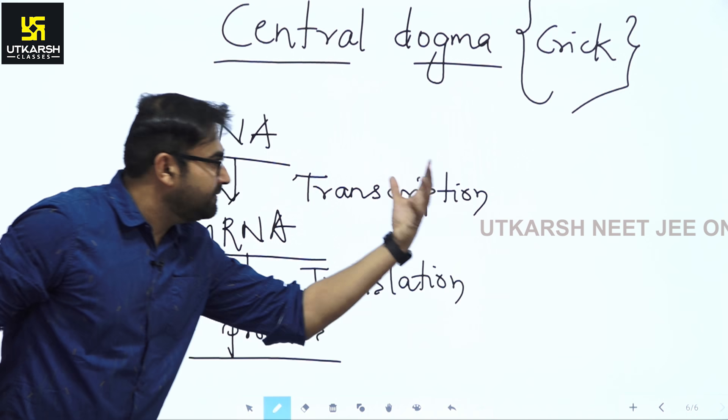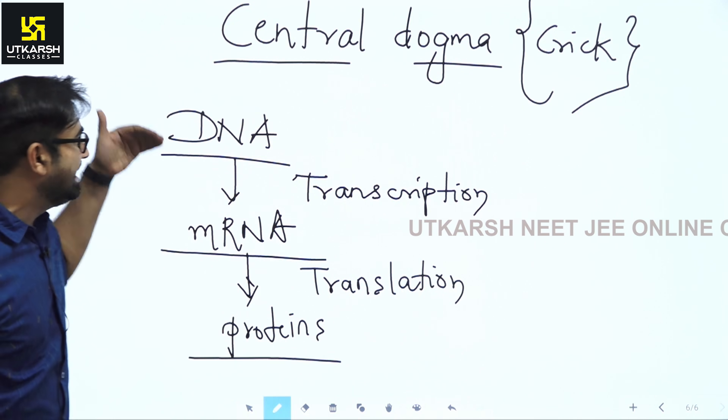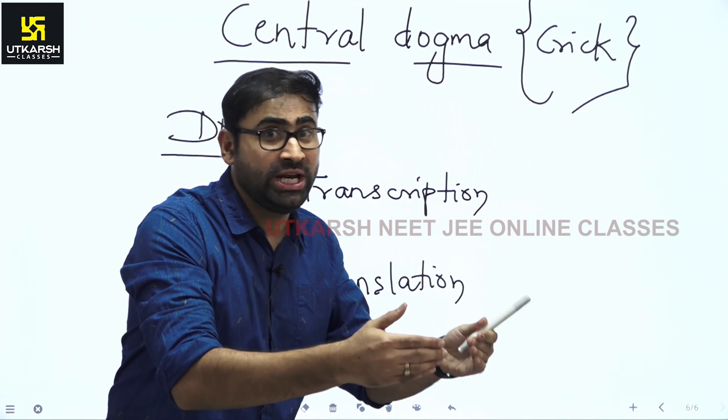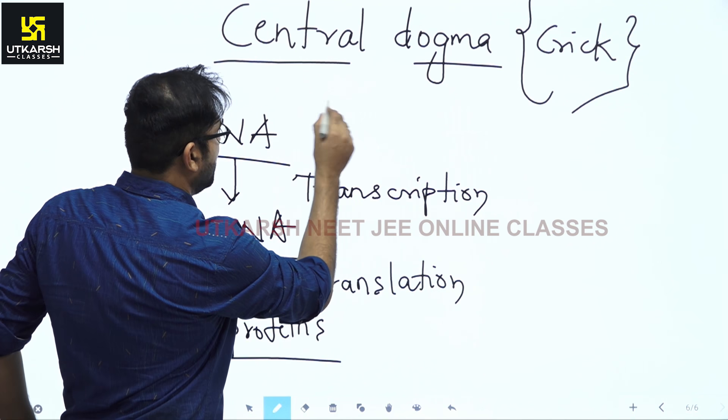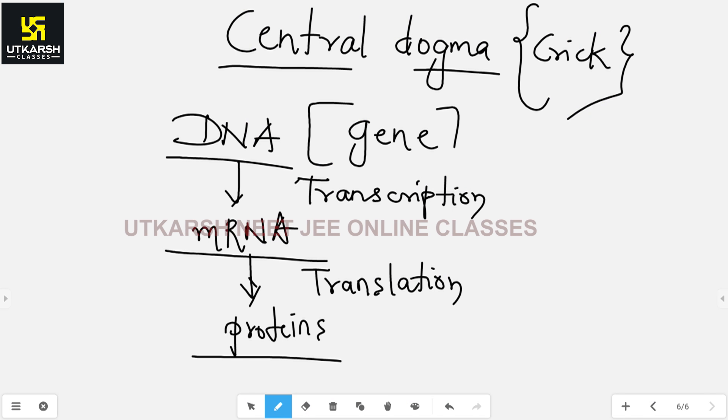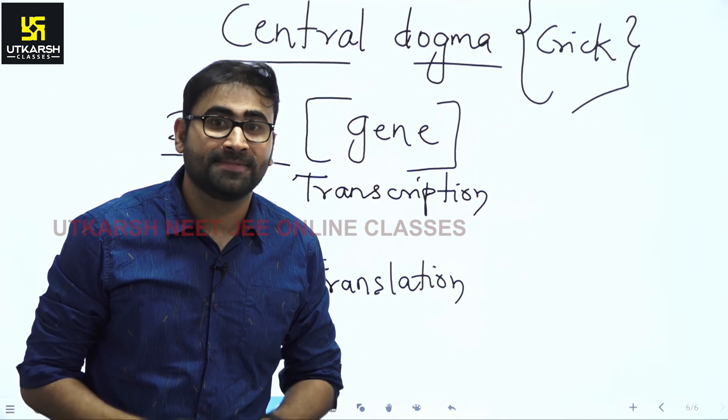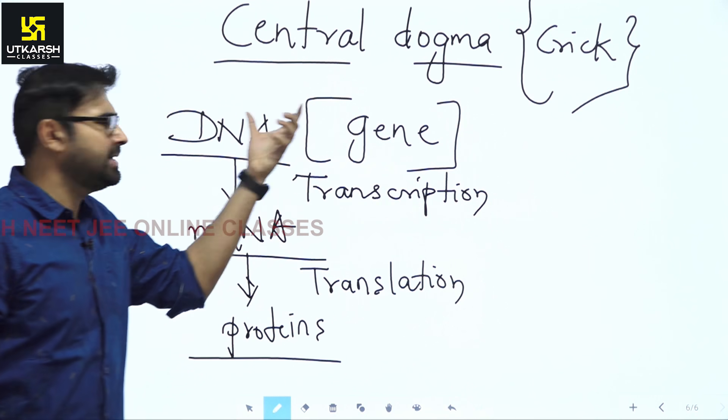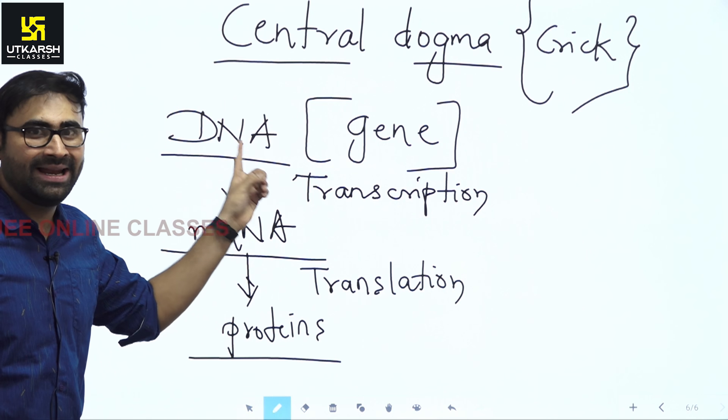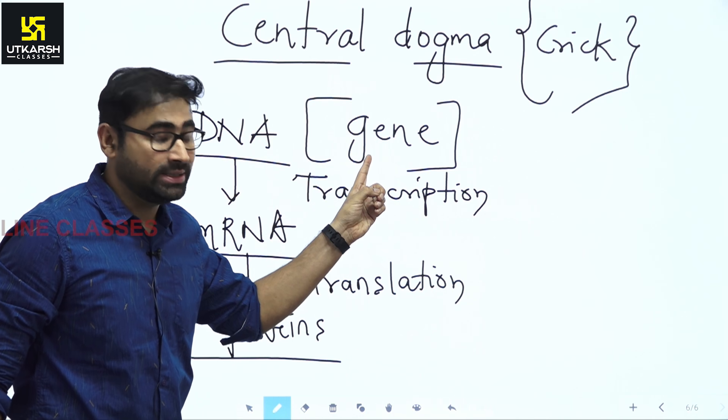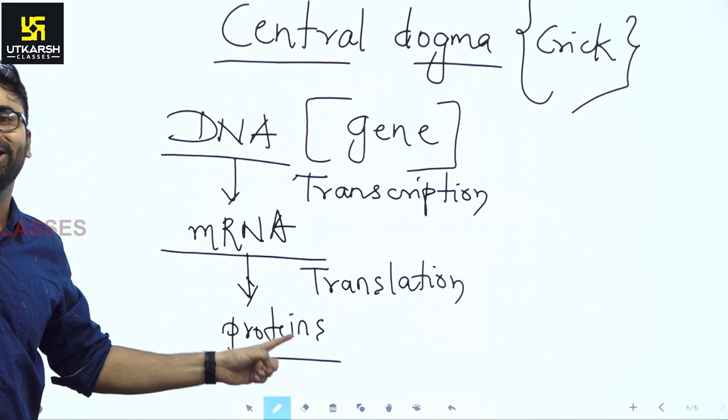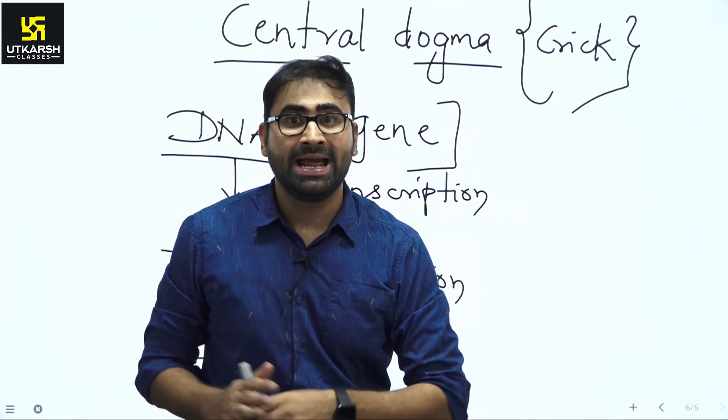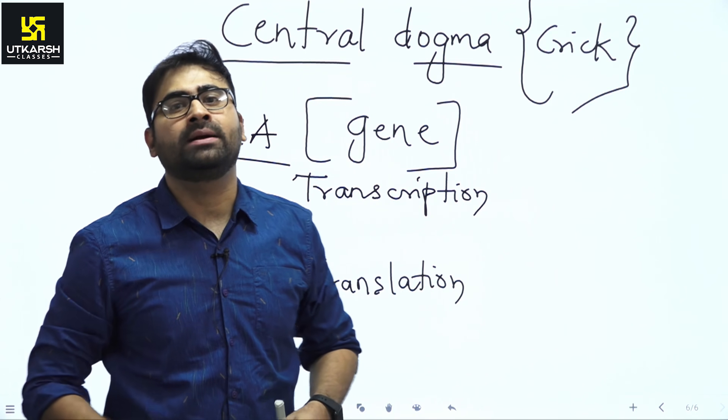So, by the process of transcription and translation, DNA codes for proteins. Now, coming back to how a gene controls a character, I do nothing but add gene here. So, gene is a nucleotide sequence. Gene is same as the DNA, but it is that DNA, it is that nucleotide sequence which is coding for a protein. So, a gene forms a protein and by forming a protein it controls a character.